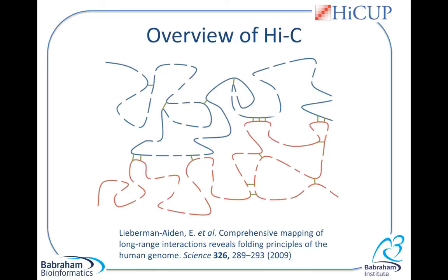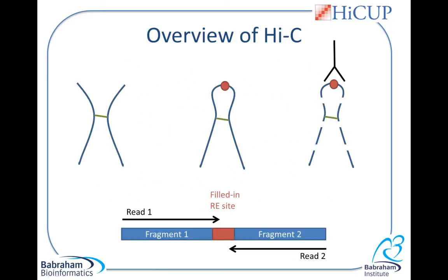These protein-DNA cross-links are then further shortened by a sonication step. These fragments sent for paired-end sequencing are termed di-tags. In theory, the forward read should represent the sequence from one restriction fragment, and the reverse read should represent the sequence from another restriction fragment.